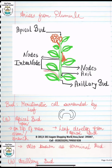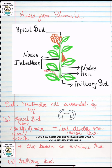Hello and welcome back to Edu Tales. Today we are going to see about buds. Basically, if this is a meristematic tissue, it is apical meristem. And if it is a leaf-like structure, it is a bud. This is a bud. Meristematic cells are surrounded by a leaf-like structure — that is a bud.